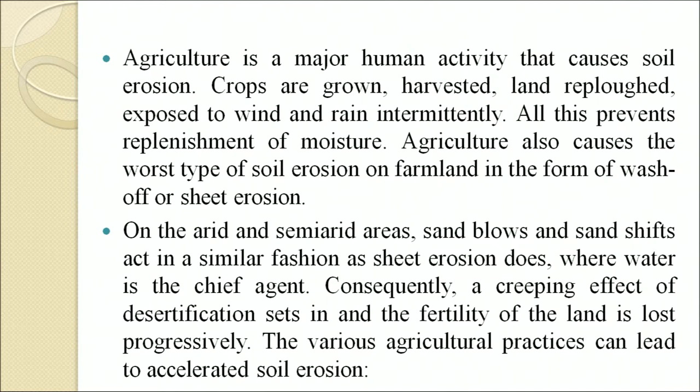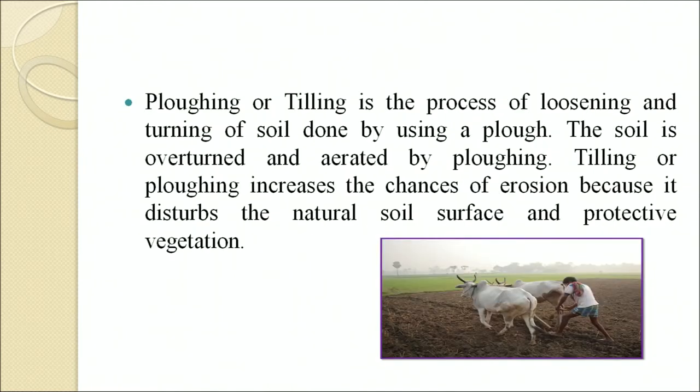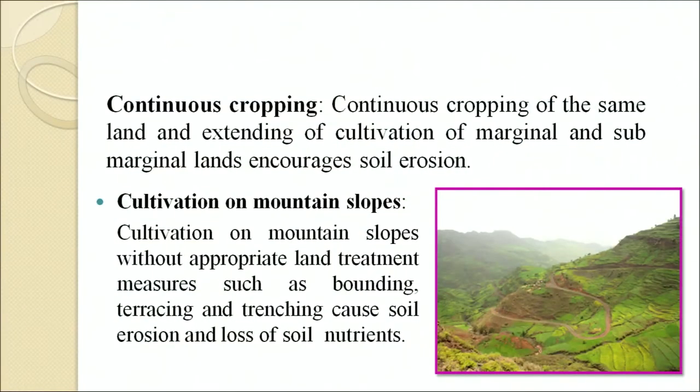Various cultural practices can lead to accelerated soil erosion. Plowing or tilling is the process of loosening and turning of soil using a plow. Plowing increases the chances of erosion because it disrupts the natural soil surface and protective vegetation. Continuous cropping of the same land and extended cultivation of marginal and sub-marginal land increases soil erosion. Cultivation on mountain slopes without appropriate land treatment measures such as bounding, terracing and trenching also causes soil erosion and loss of soil nutrients.